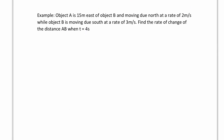Let's look at another example. Object A is 15 meters east of object B and is moving due north at a rate of 2 meters per second, while object B is moving due south at 3 meters per second. Find the rate of change of the distance AB when time is 4 seconds. Let's draw a picture. We have object A moving north, and object B to the west moving south. We want to find the distance D between A and B, so we're looking for dD/dt. Never use a lowercase d for distance because your derivative looks like dd/dt — that's just confusing.